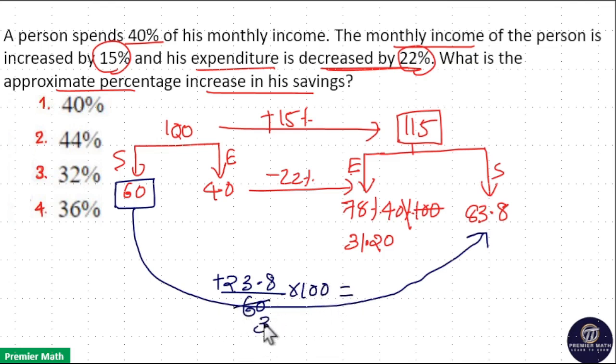20 goes 3 times in 60, 5 times in 100. Now, 3 goes around 8 times in 24. Now, 18 to 5 is around 40. So, option 1 is your answer.